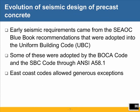Early seismic requirements in the building codes came from SEAC — the Structural Engineers Association of California — from their Blue Book recommendations that were adopted into the Uniform Building Code. Some of these were ultimately adopted by the BOCA Code on the East Coast and the Southern Building Code through reference to ANSI A58.1. The East Coast codes, however, usually allowed very generous exceptions to seismic design, so that it was considered something that someone else did in most areas east of the Mississippi.